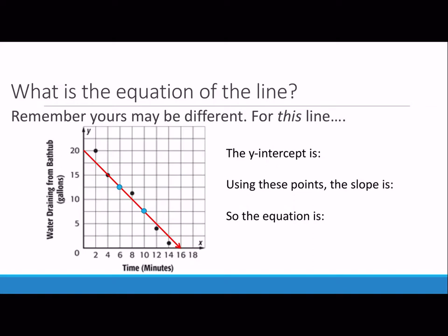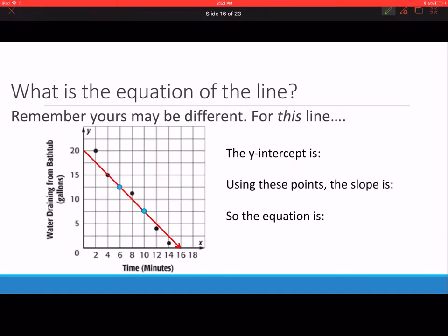The process is: you figure out the y intercept, you figure out the slope by picking two points and slip and slide, and then you write the equation. Keep in mind your line may be different from my line because these lines are approximations, but I want you to do the practice in terms of how you're going to answer these questions.